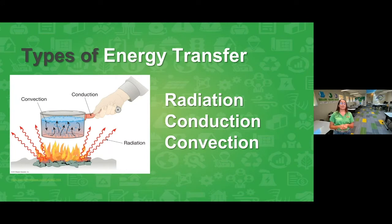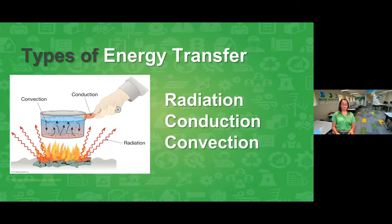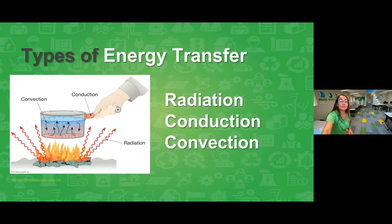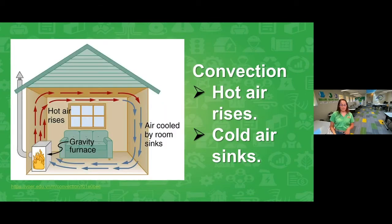The next one is convection, and it's the one we'll focus on for the rest of our afternoon. Convection doesn't use touch — it uses circular motion through either air or liquids. In this image, water is boiling and the heat is circulating through the hot water. For convection, we make a circle motion with our hands. So we have three types of energy transfer: radiation, conduction, and convection.